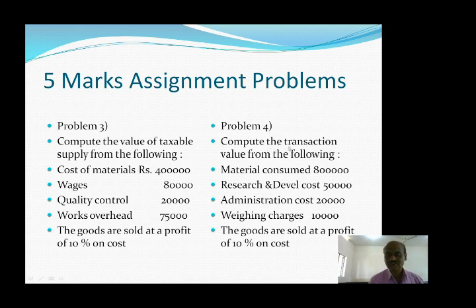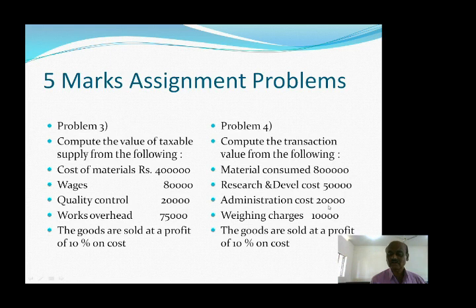One more problem on cost details: compute the transaction value from the following — material consumed rupees 8 lakh, research and development cost rupees 50,000, administration cost relating to production, and the goods are sold at a profit of 10% on cost. Solve this using the same cost-sheet format and add the profit percentage to get the transaction value.